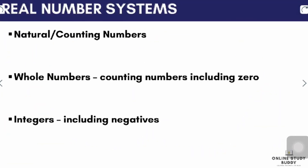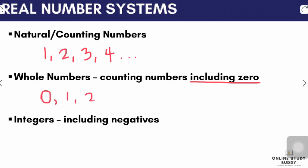For the next part, let's proceed with the lesson on real number systems. The real number system consists of 5 different classifications. First, natural or counting numbers include 1, 2, 3, 4, 5, and so on — these are the positive numbers normally used for counting that we've learned since childhood. Next, whole numbers are counting numbers but we include 0, so we have 0, 1, 2, 3, 4, 5, and so on.